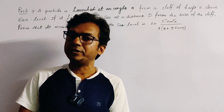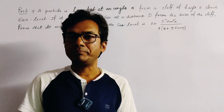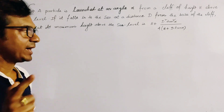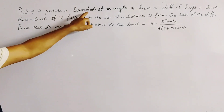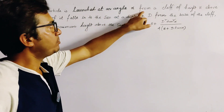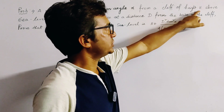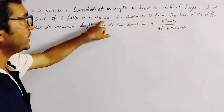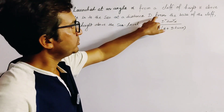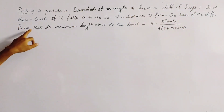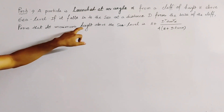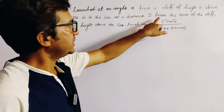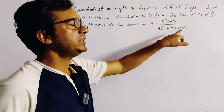This is a very important and interesting problem of projectile motion. A particle is launched at an angle alpha from a cliff of height H above sea level. If it falls into the sea at a distance D from the base of the cliff, prove that its maximum height above sea level is H plus D squared tan squared alpha divided by 4 times (H plus D tan alpha).